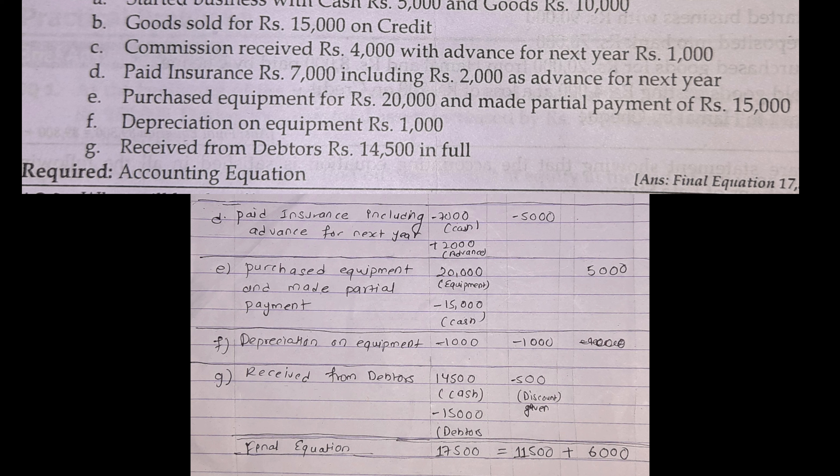If we increase Rs. 3,000, we will increase Rs. 6,000. So we record Rs. 7,000 advance for next year. We increase Rs. 4,000 in the option, and receive Rs. 7,000 to Rs. 8,000.